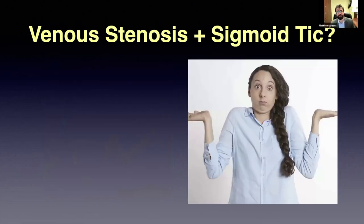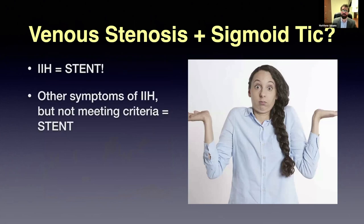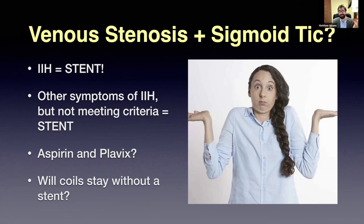Both cases had venous stenosis and sigmoid sinus diverticulum — so which do we treat? If the patient is IIH, stenting cures the IIH. If they have any symptoms close to IIH — headaches, temporary sixth nerve palsies, elevated or even normal opening pressure with other signs — we stent after trying Diamox. But stenting requires aspirin and Plavix for at least three months, then aspirin for a year. If they can't tolerate that, maybe we do the diverticulum treatment. If it doesn't sound like IIH and it's just the diverticulum, we can try coiling, but only if the coils will stay without a stent; if not, we try the stent alone.